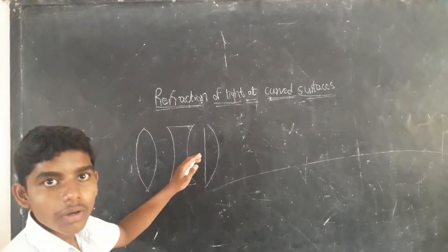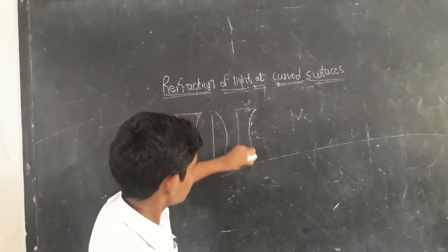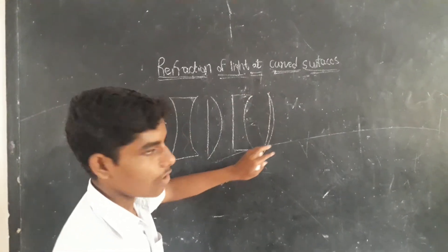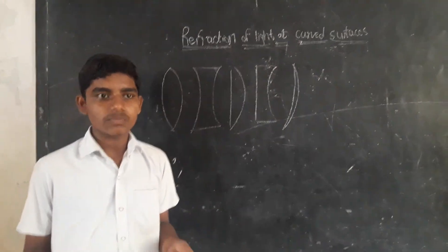This is plano-concave lens. This is plano-convex lens. This is concavo-concave lens. These five types are the types of lenses in our textbooks.